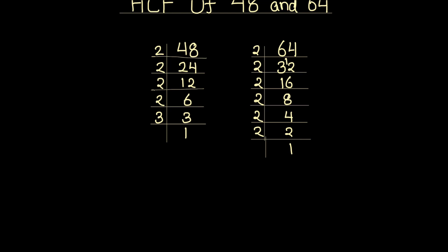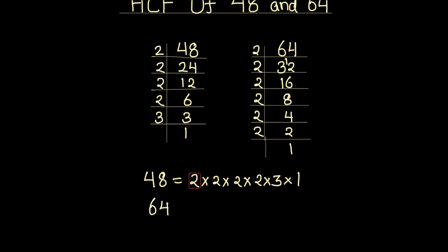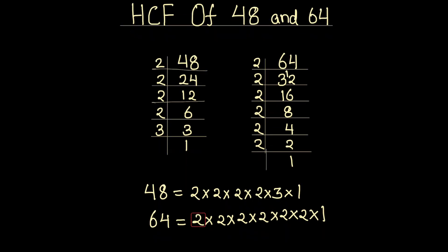Let's write these numbers as the product of their prime factors. So 48 can be written as 2 times 2 times 2 times 2 times 3 times 1, and 64 can be written as 2 times 2 times 2 times 2 times 2 times 2 times 1. Now for finding the HCF of the two numbers, we will first find the common factors.